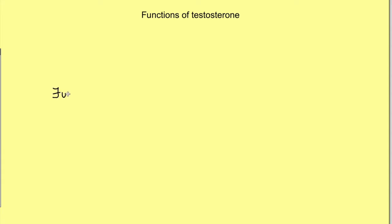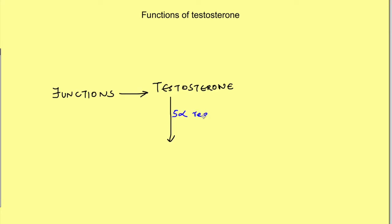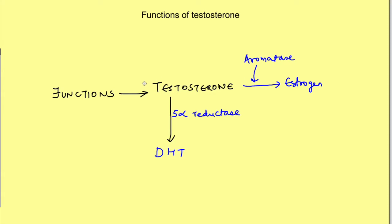The main hormone testosterone has various functions and acts in various phases of life, either in its basic form as testosterone, or after getting converted to dihydrotestosterone by the enzyme 5-alpha reductase present in the cytoplasm of the cell. It can also get converted to another hormone, estrogen. So its functions may be by direct action of testosterone, by dihydrotestosterone, or as estrogen.